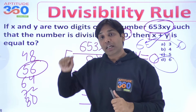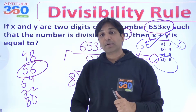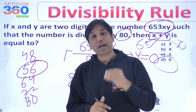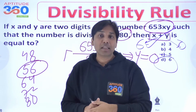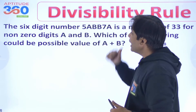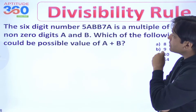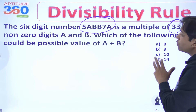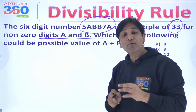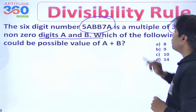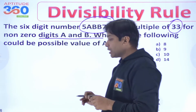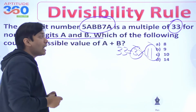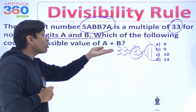Rather than watching these questions here, you can go to the description box where I have written all those problems — take them as exercises, solve them, then come back and watch these videos. Now let's solve the next problem: the 6-digit number is a multiple of 33, with non-zero digits A and B. Which of the following could be the possible value of A plus B? Now 33 is a composite number: 33 = 3 × 11. So a number which is a multiple of both 3 and 11 is also going to be a multiple of 33.